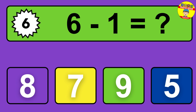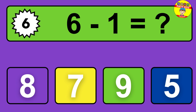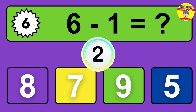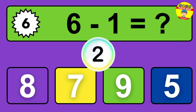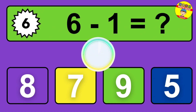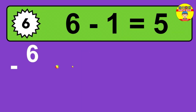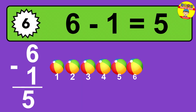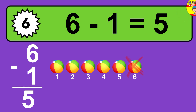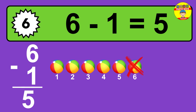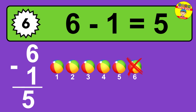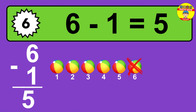Question six: seven minus one equals what? So the answer is seven minus one is six. Let's count it — one, two, three, four, five, six.